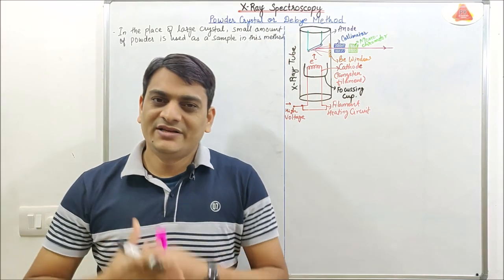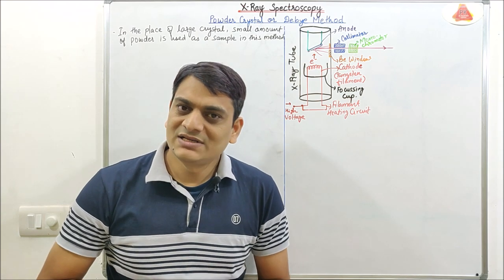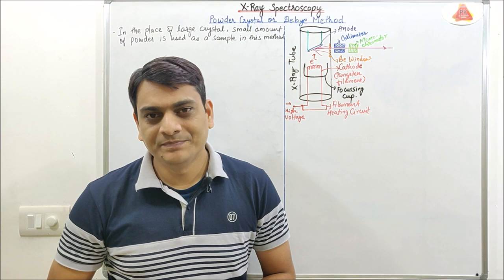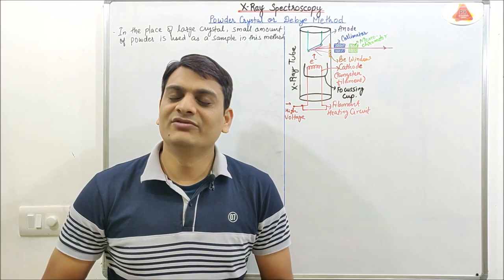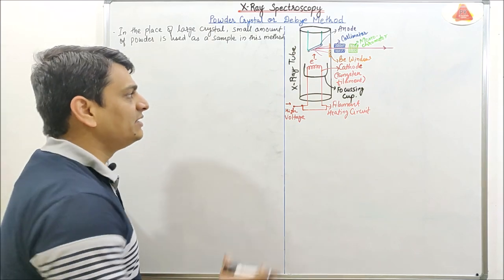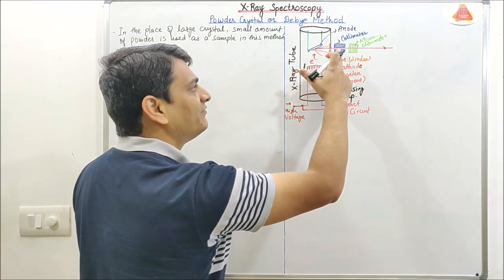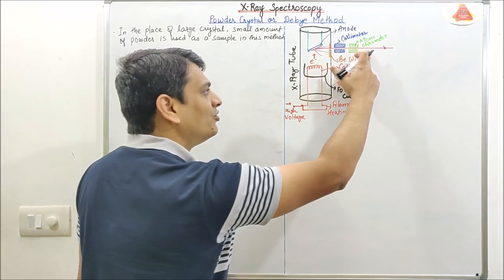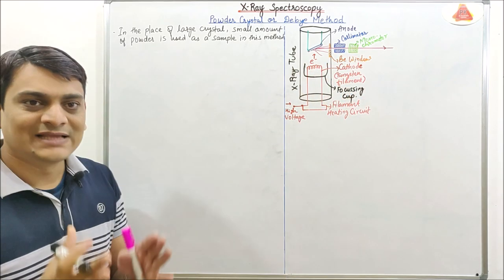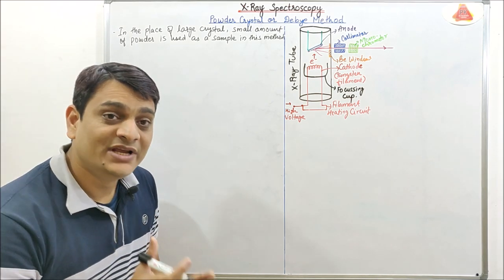Now coming to the radiation source of this method. Just like the previous rotation crystal method, we were using a monochromatic beam, and here also we are using a monochromatic beam. This monochromatic beam will be formed by an x-ray tube, and finally this x-ray will be converted into the form of a monochromatic beam. It will go further towards the sample which will be present in the axis of the camera.